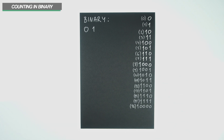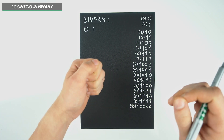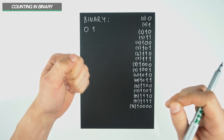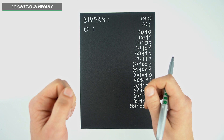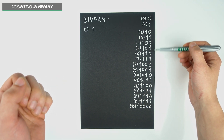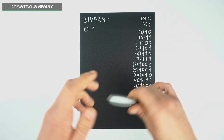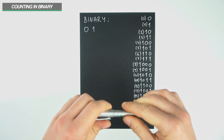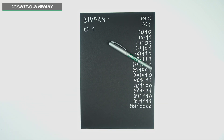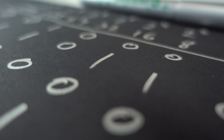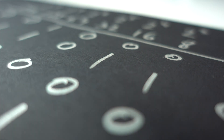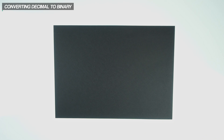Here's what these binary numbers equate to in decimal. Now, what if someone asked you to write out the binary number for 69? You're not going to start from 0 and work your way up. I'm going to show you how you can convert any decimal number to binary, and vice versa, in no time. First, here's how we can convert decimal to binary.